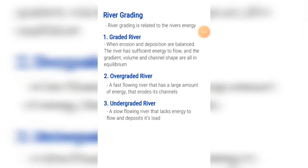The second type of river grading is an overgraded river. It is a fast flowing river that has a large amount of energy and erodes its channels. The third type is an undergraded river — a slow flowing river that lacks energy to flow and deposits its load.